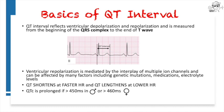We'll start from the very basics. The QT interval is defined as the interval from the onset of the QRS complex — that is the earliest indication of ventricular depolarization — to the end of the T-wave, that is the latest indication of ventricular repolarization.